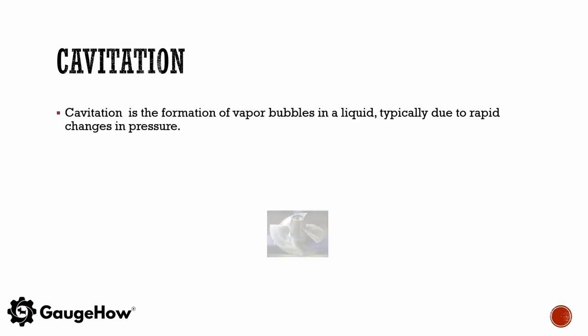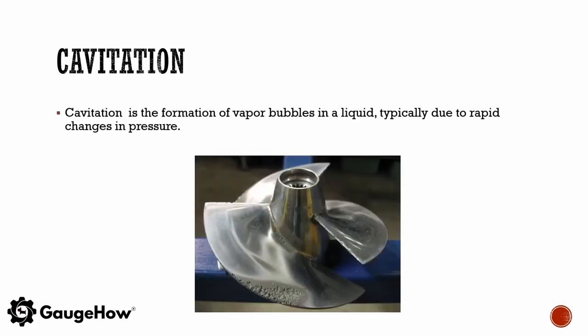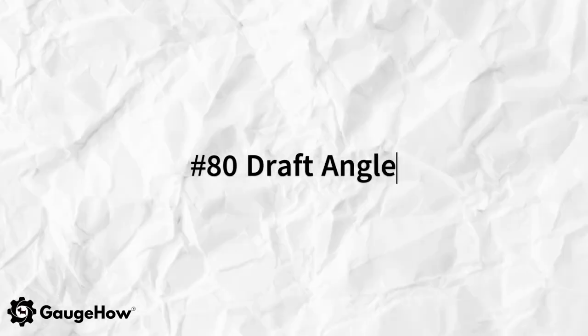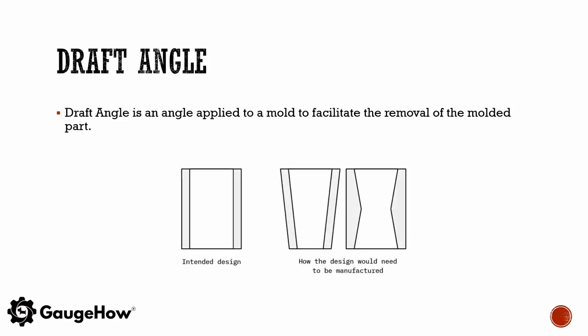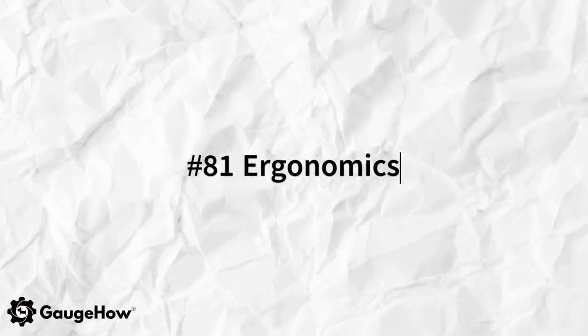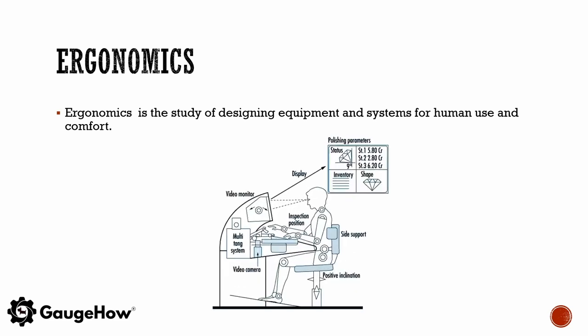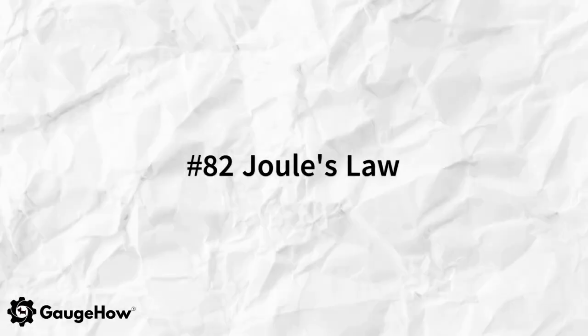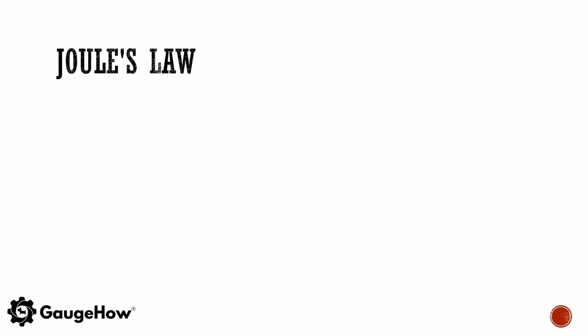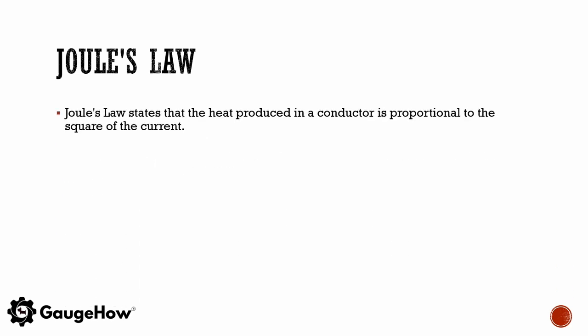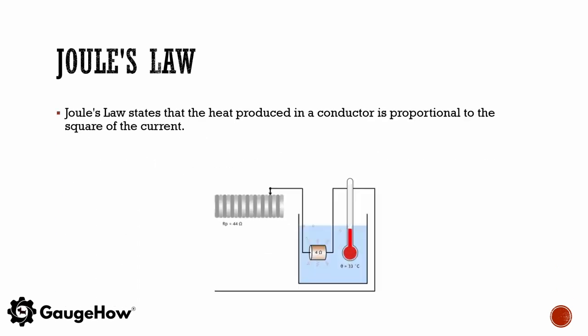Cavitation is the formation of vapour bubbles in a liquid, typically due to a rapid change in pressure. A draft angle is an angle applied to a mould to facilitate the removal of the moulded part. Ergonomics is the study of designing equipment and systems for human use and comfort. Joule's law states that the heat produced in a conductor is proportional to the square of the current.